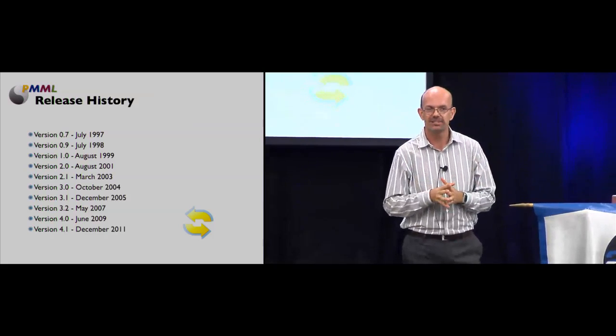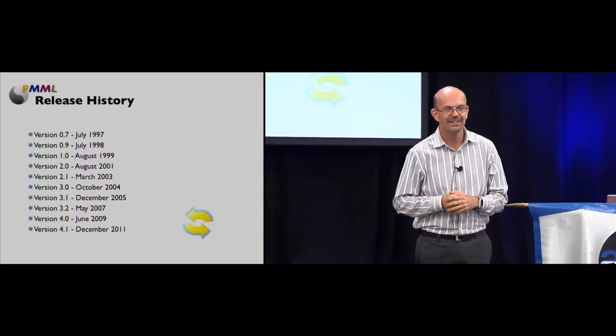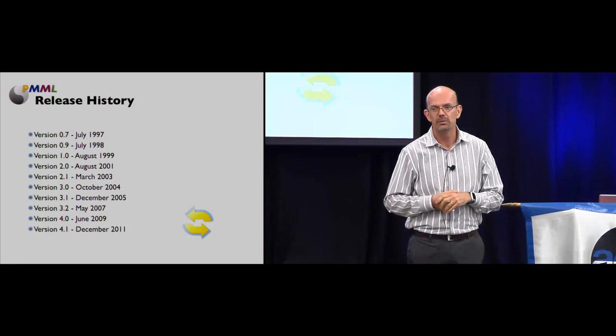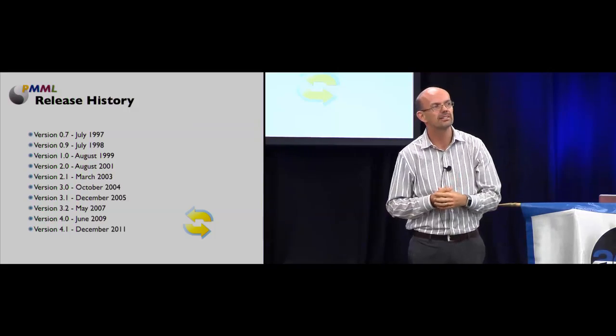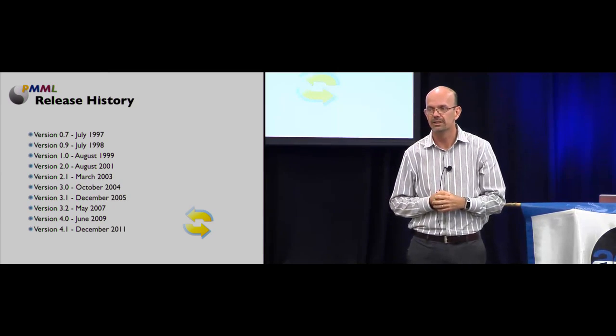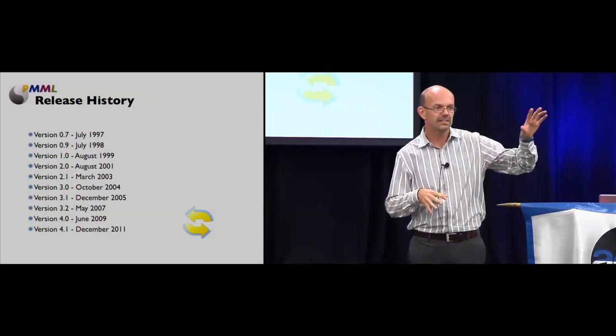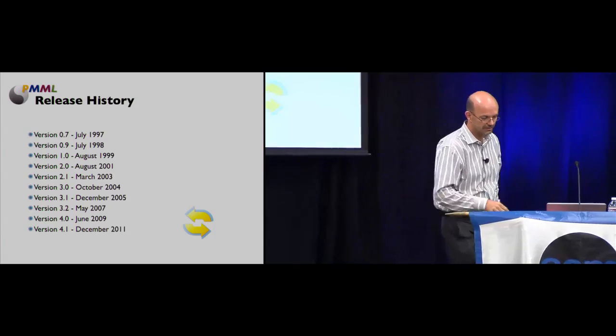Release history: PMML is mature and refined — it's actually 15 years old. The first version was 0.7 in July 1997, all the way to December last year with the release of PMML 4.0.1. I'm actually a representative for Zementis in the Data Mining Group, so I'm part of the committee that defines the standard. It's quite a battle: for any proposal to get accepted, it needs to be approved by all members — 100% consensus. Sometimes it's too democratic. You have a release about every two years because of how the committee works, but at the end you have a product that can be used and understood by all.